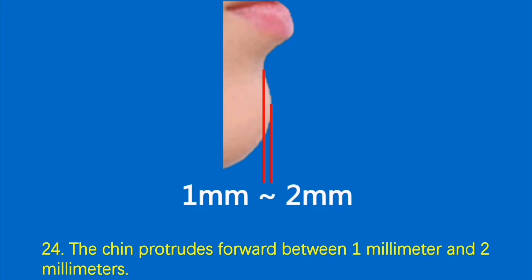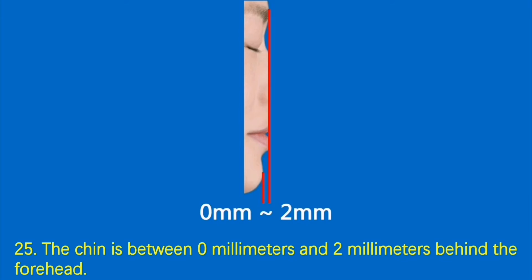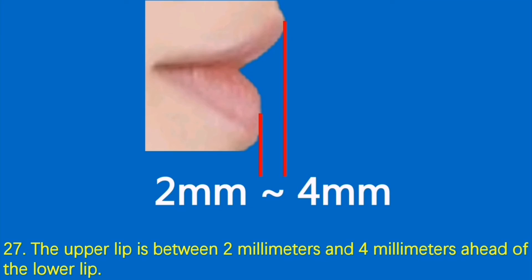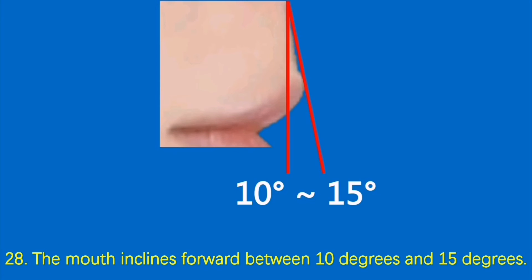Condition 24: The chin protrudes forward between 1 millimeter and 2 millimeters. Condition 25: The chin is between 0 millimeters and 2 millimeters behind the forehead. Condition 26: The lower lip is between 4 millimeters and 6 millimeters ahead of the chin. Condition 27: The upper lip is between 2 millimeters and 4 millimeters ahead of the lower lip. Condition 28: The mouth inclines forward between 10 degrees and 15 degrees.